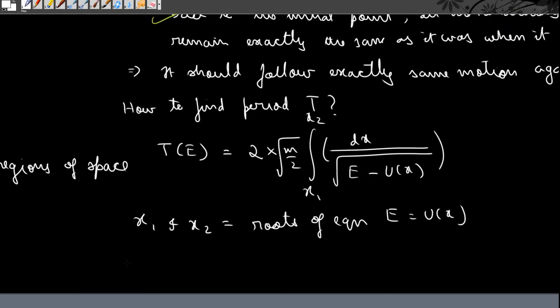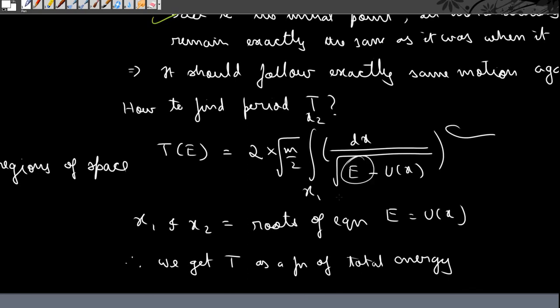Therefore we get T as a function of total energy E, because when we apply the limits of integration all the x in this equation goes away and what we are left with is energy. So if we vary the energy the time period may also vary, depending on what this integral gives. I hope you have understood this, and that's it for this video — see you next time.